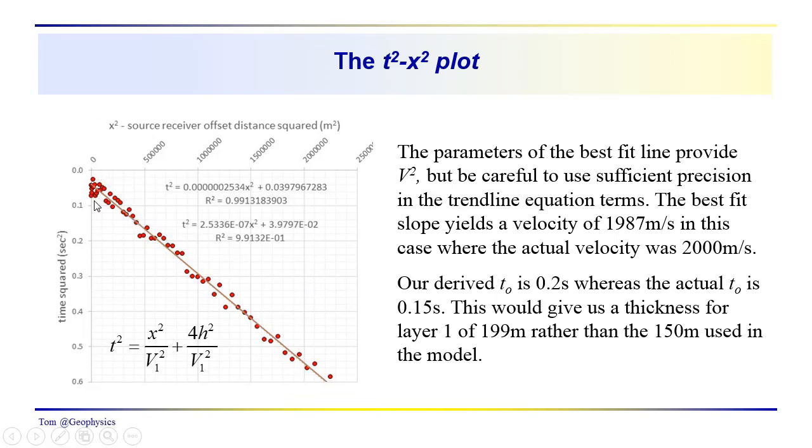Actual data has some noise in it. Here we're looking at a T squared X squared representation of the data. T squared is our dependent variable, X squared our independent variable.